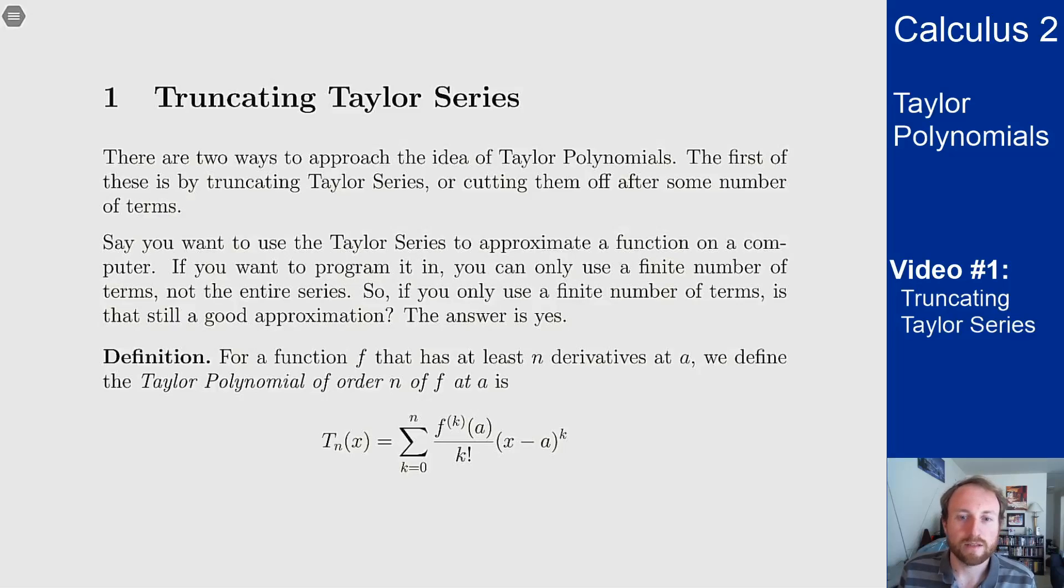In this video we'll talk about Taylor polynomials, define them, and discuss one way you can think about them as objects. There are a couple of ways you can think about these objects and how they behave. The first is the idea of truncating Taylor series, or basically cutting off a Taylor series after so many terms.